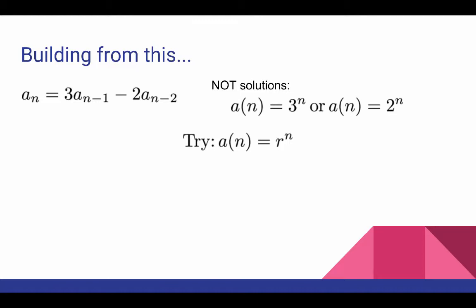Well, if r^n is a solution, then if I plug that formula in for the terms of the recurrence relation, I should get this formula. Now all those formulas have a lot of factors of r. So if we divide off both sides of this equation by r^{n-2}, that will give me this formula.